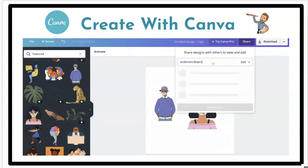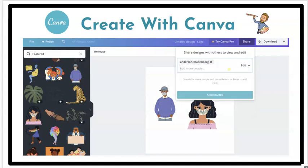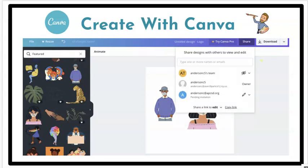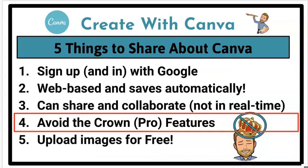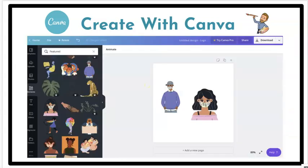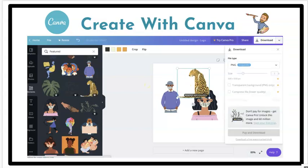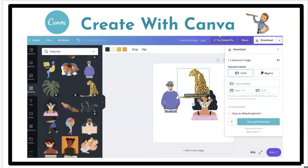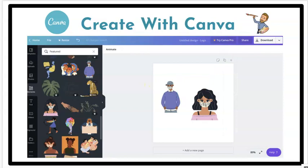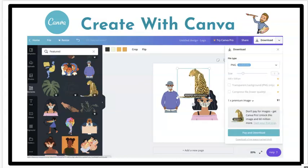So if one student was working on it in class and then that evening another student was working collaboratively on that project, they could work on it — just not at the same exact time. The fourth thing I wanted to stress is to avoid the crown or pro features. The pro or crown features are ones you have to pay for. They're clearly marked within Canva — if you see the little crown that says 'pro,' or if you bring it into your work and it says 'remove watermark,' you're going to have to pay to download your work.